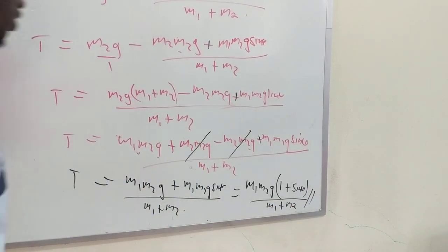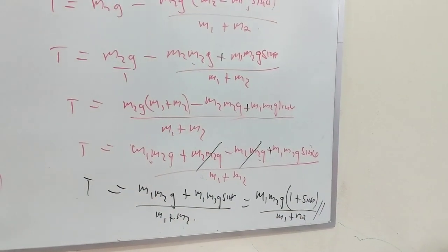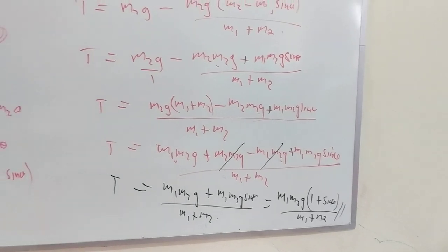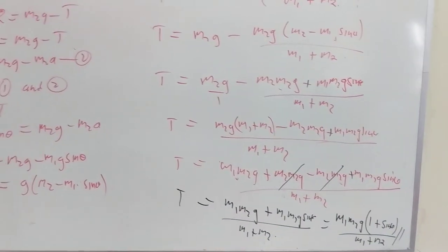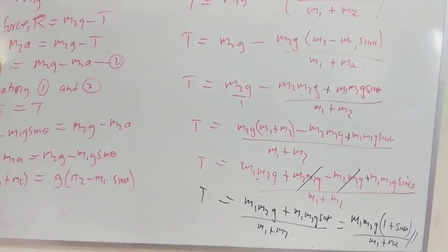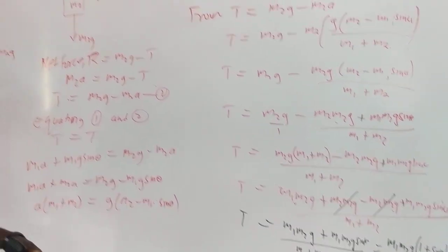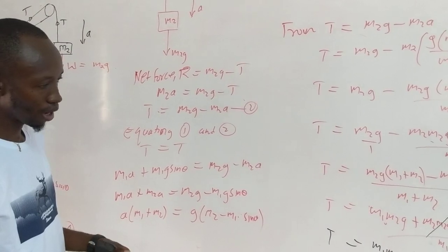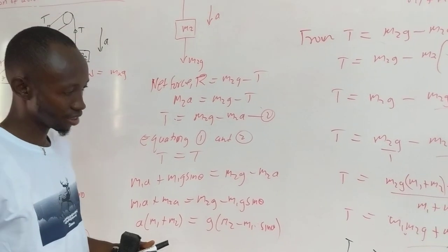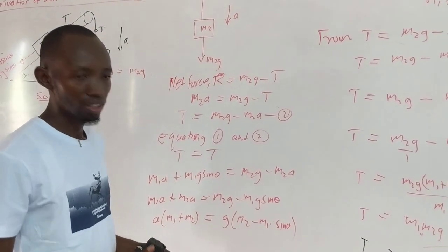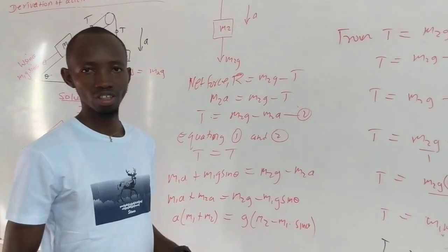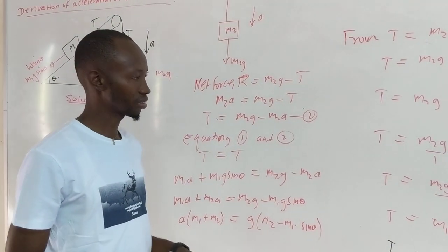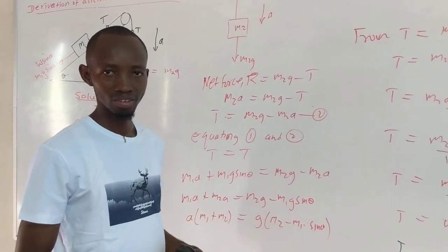So T = M1M2G(1 + sin theta) / (M1 + M2). This is the tension acting in the string of the inclined plane system. Thank you all, stay blessed. We will see you next time — that's the end of this video.